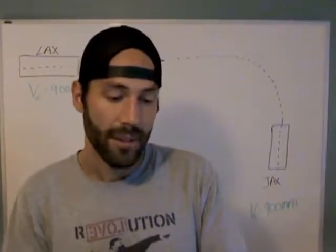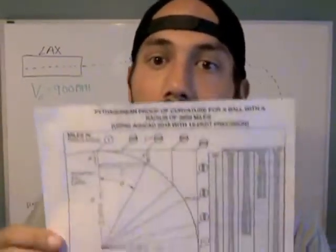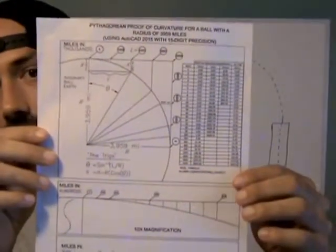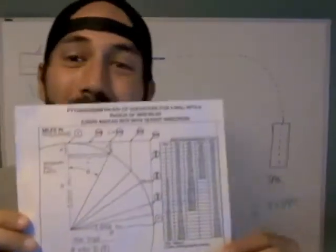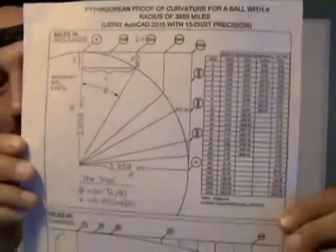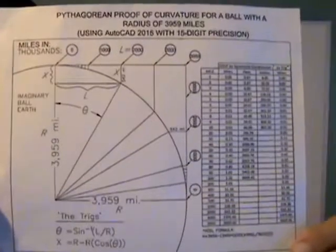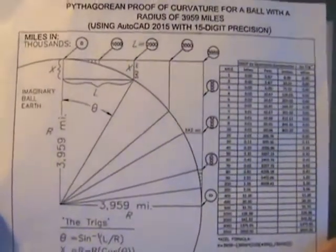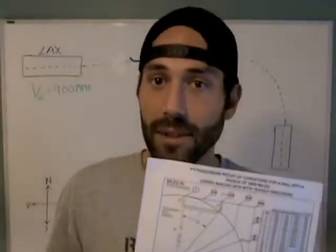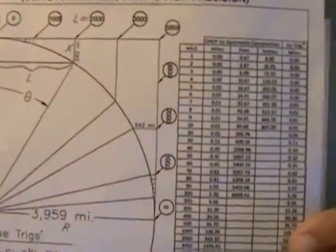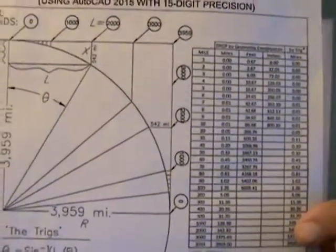And so I found that the Flat Earthers, the Flat Earth community, had created this curvature chart. They're showing how much curvature would have to be, that we would have to see in all directions, because it's a sphere, anywhere on Earth. And this was drawn in AutoCAD.